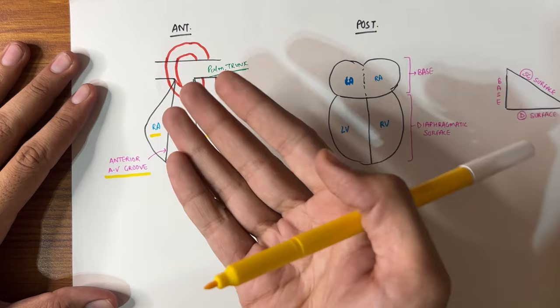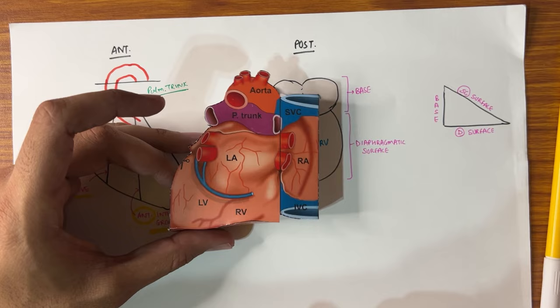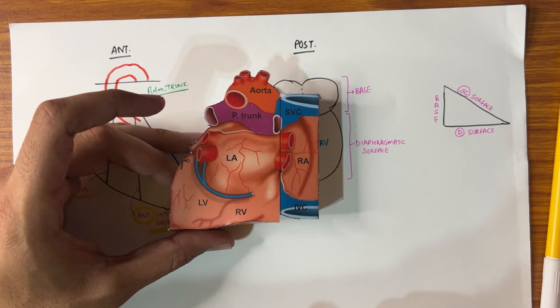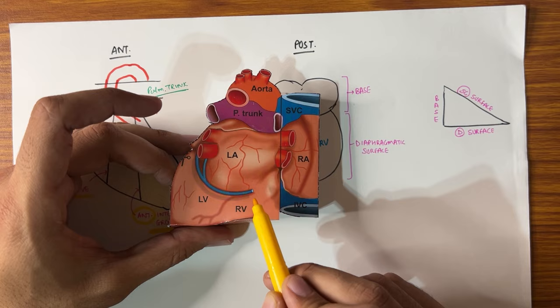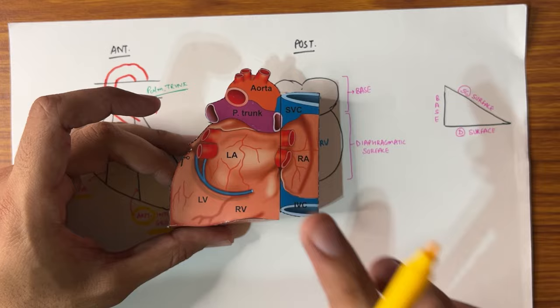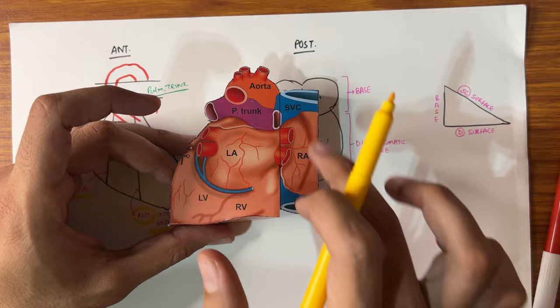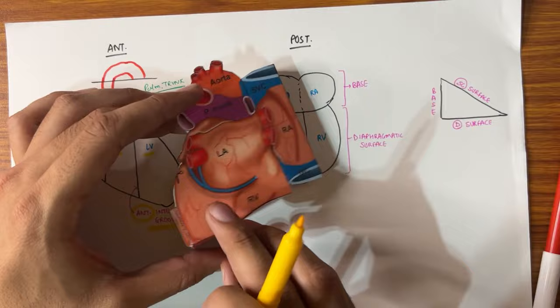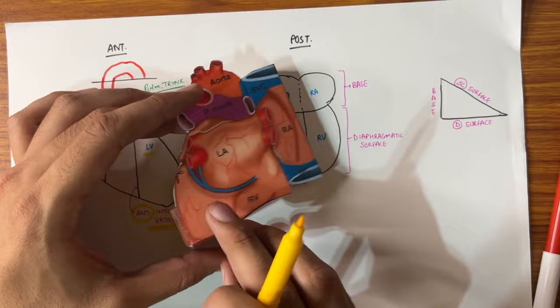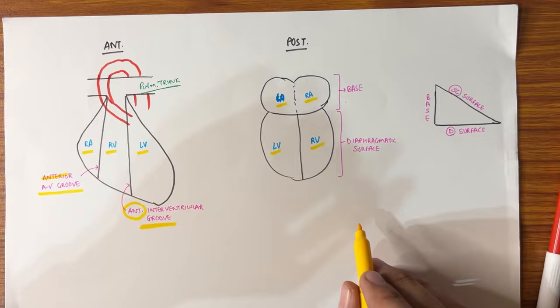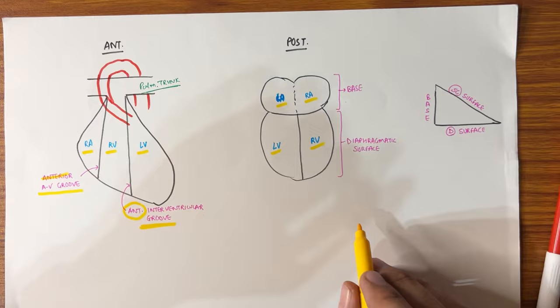From the back view, I have seen four things: left atrium, right atrium, left ventricle, and right ventricle. The majority of the posterior surface is made up of the left ventricle and left atrium. Our heart is not straight from the back — if you see from the side view, what is at the back is called the base. So our heart has a diaphragmatic surface and a base. The base of the heart is formed by both atria.